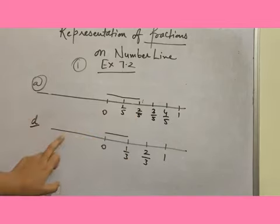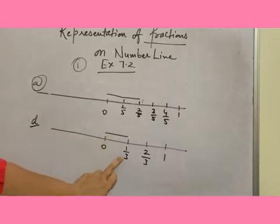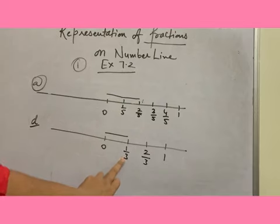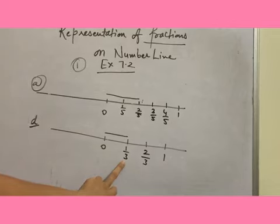And in the next part, this line is finishing on this point, and this point is representing 1 by 3. So 1 by 3 is your answer. In the other parts, the finishing line is finishing at 5 by 8 point.